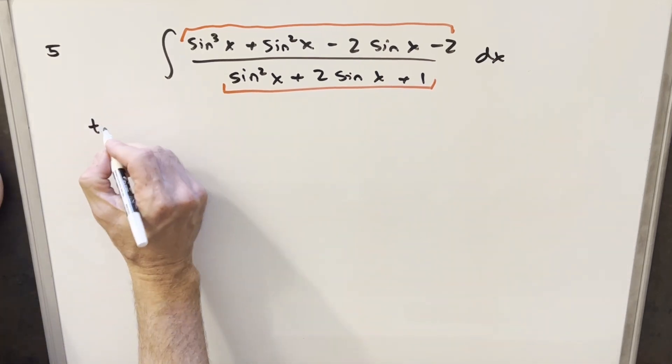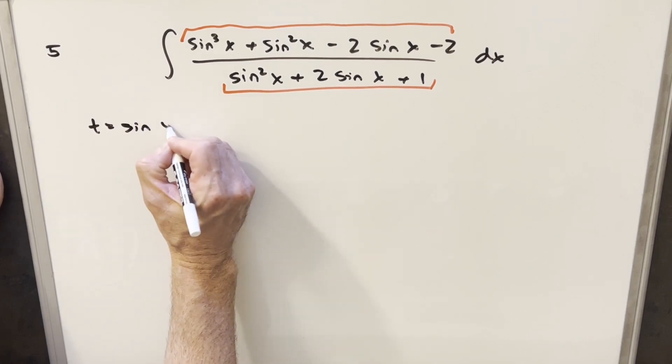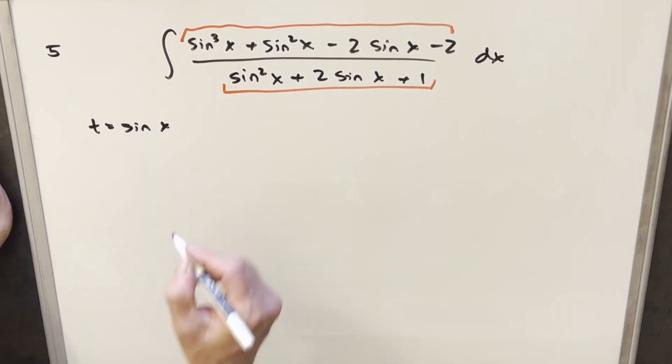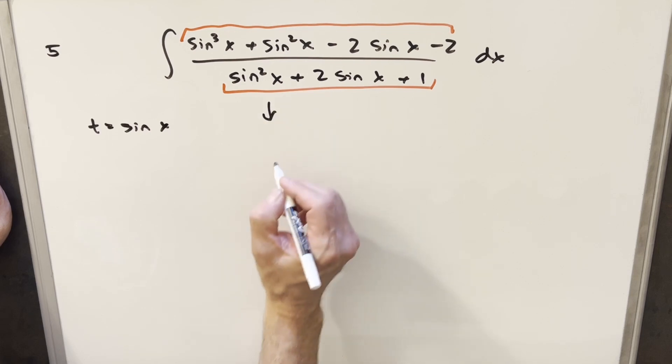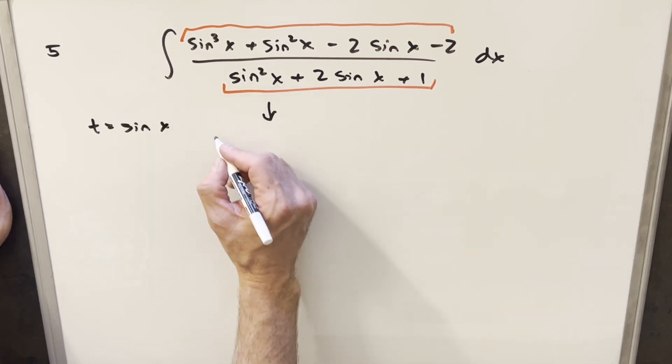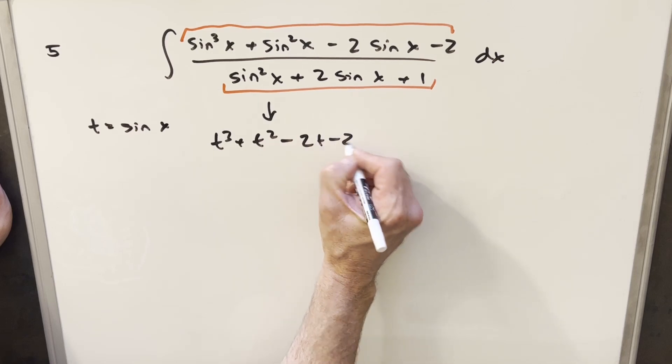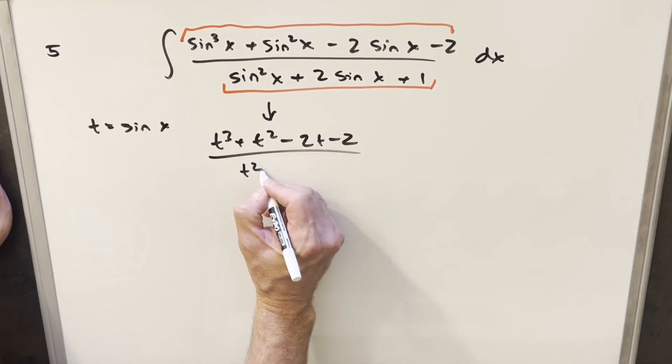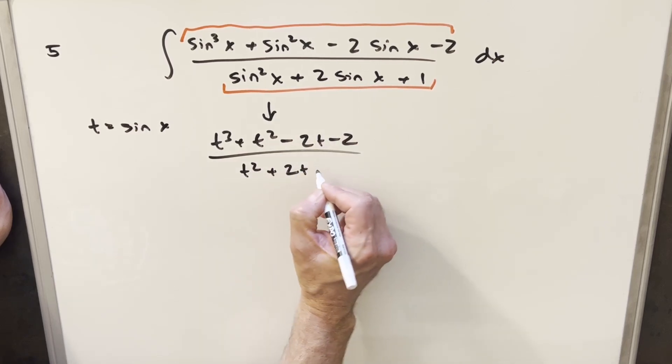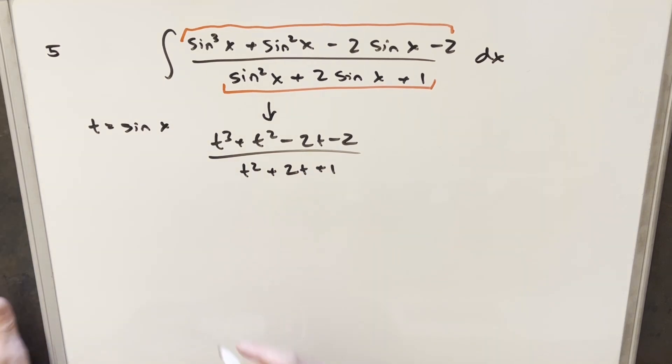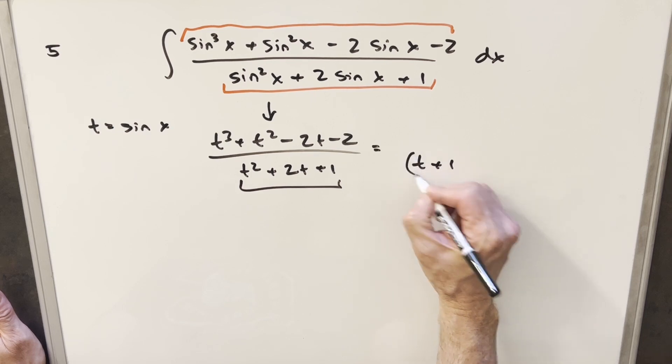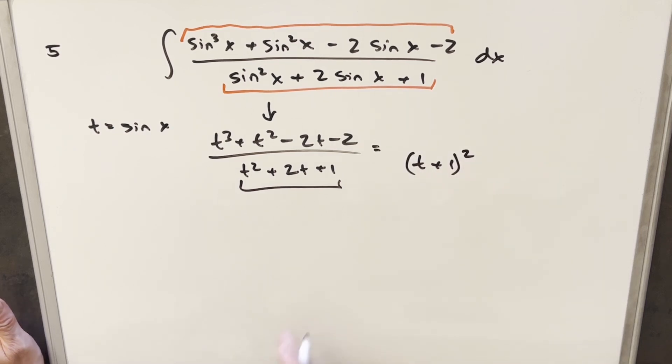So what I'm going to do with my algebra here is I'm actually just going to set sine x equal to t in order to factor this thing. And so what we're looking at, just breaking down this integrand, we're going to have t cubed plus t squared minus 2t minus 2, all over t squared plus 2t plus 1. And first of all, I noticed that this here is going to be a perfect square. So I'm going to write the denominator here as t plus 1 squared.